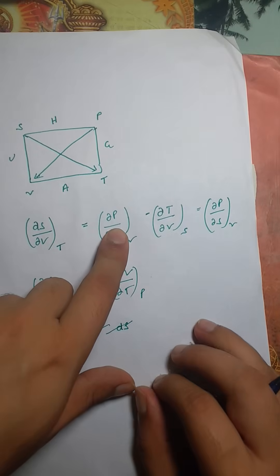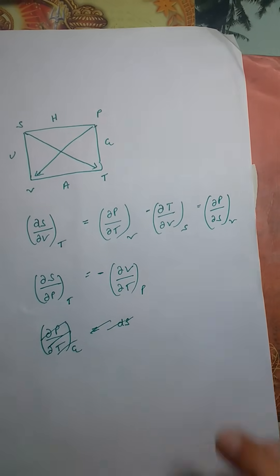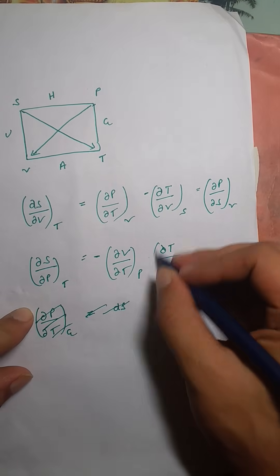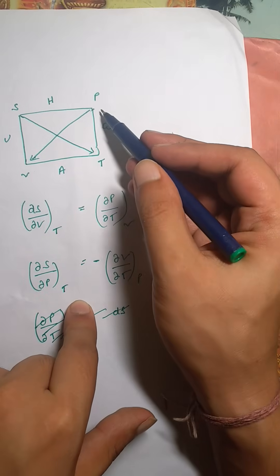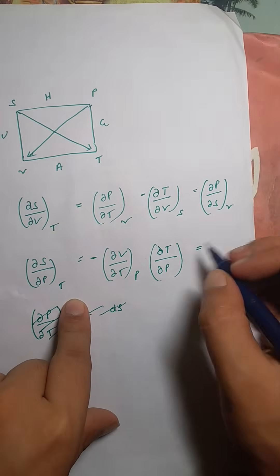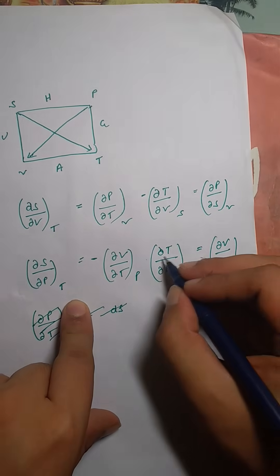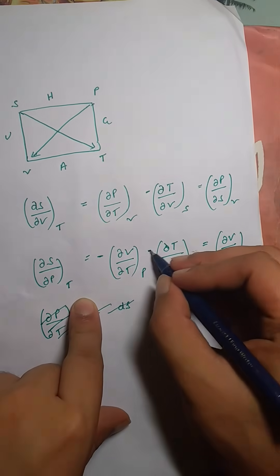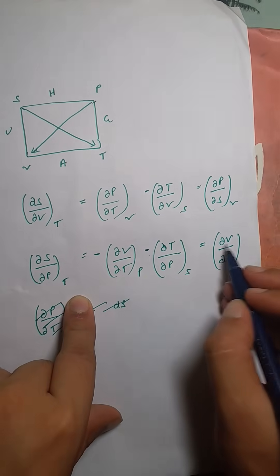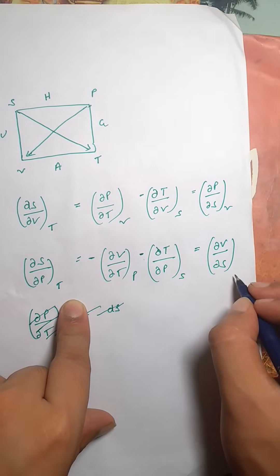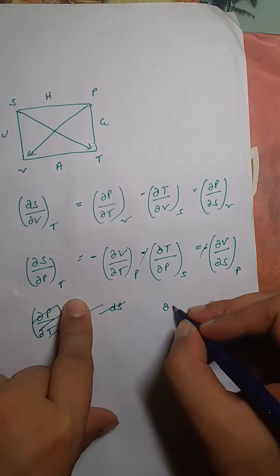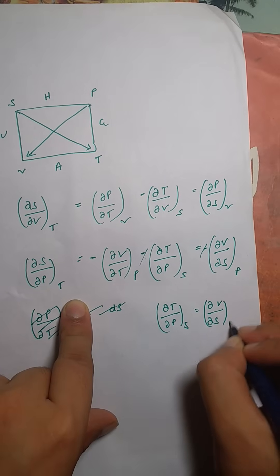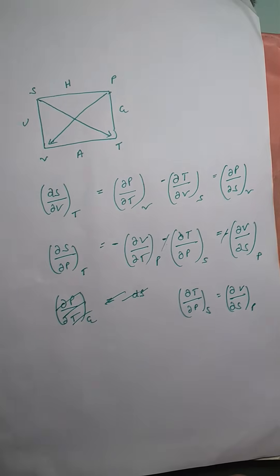For the fourth relation, (∂T/∂P): the opposite of T and P is V and S, so write (∂V/∂S). The numerator T has the arrow going from T to S — negative. For volume, we're going from V to P — also negative. Negative times negative cancels, so (∂T/∂P)_S = (∂V/∂S)_P. These are the four basic Maxwell relations.